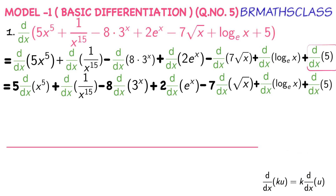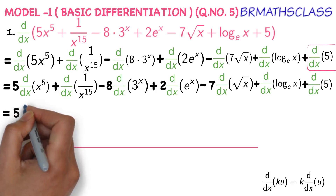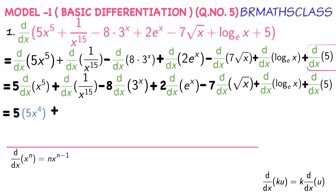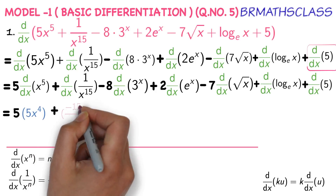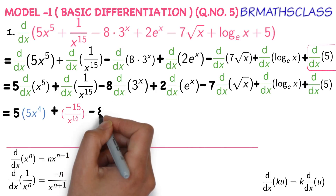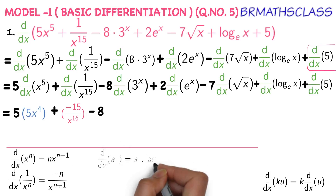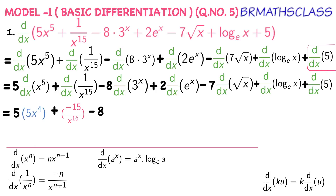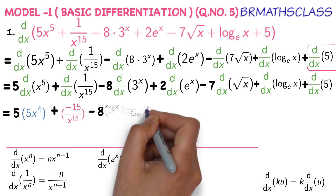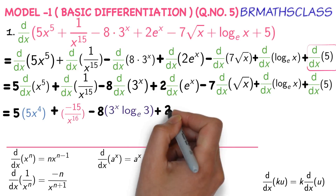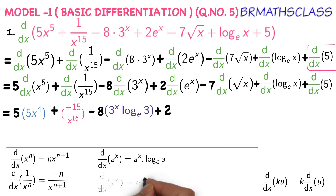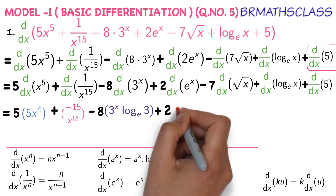Now, 5 into — we know the formula: derivative of x power n is n into x power n minus 1. So derivative of x power 5 is 5 into x power 4. Plus — derivative of 1 by x power n is minus n divided by x power n plus 1, so derivative of 1 divided by x power 15 is minus 15 divided by x power 16. Minus 8 into — derivative of a power x is a power x into log a base e, so derivative of 3 power x is 3 power x into log 3 base e. Plus 2 into — derivative of e power x is e power x.